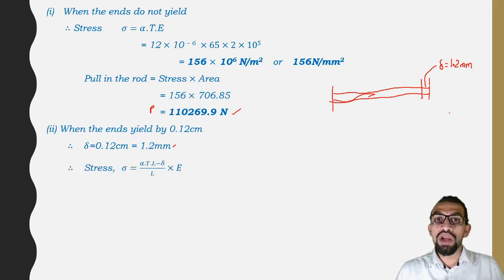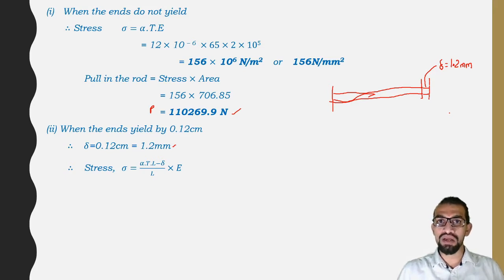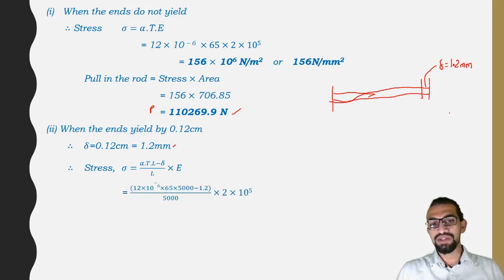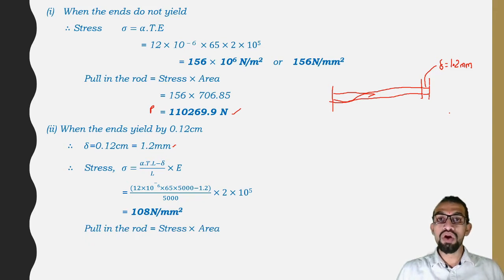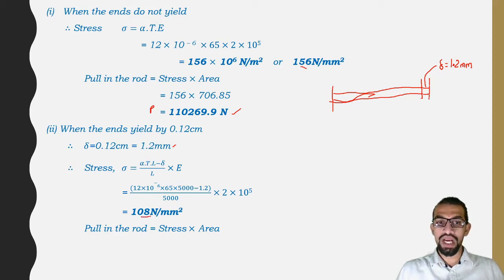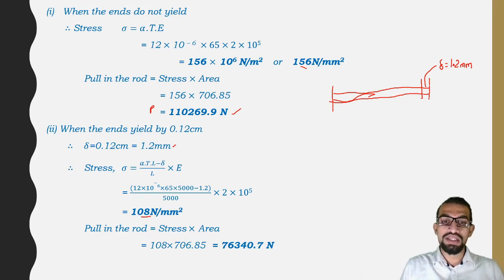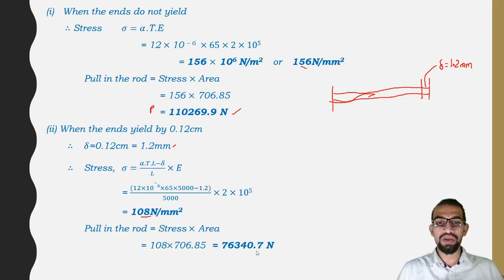When ends yield, the stress formula changes to: σ = [(α × T × L) − δ] / L × E. Substituting all values, stress = 108 N/mm². Previously with no yielding we got 156 N/mm², now with yielding it is 108 N/mm² — which is less. Pull = stress × area = 76,340.7 N.